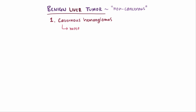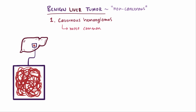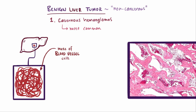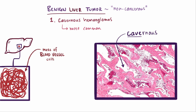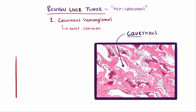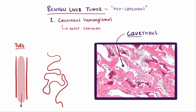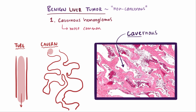Cavernous hemangiomas are the most common form, and are masses or swelling of the endothelial cells in the blood vessels of the liver. On histology, they form these huge vascular spaces that sort of look like a system of caves. Instead of blood flowing through a tube, the blood goes into a giant cavern with endothelial cells randomly sprinkled throughout.